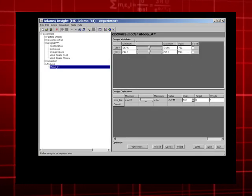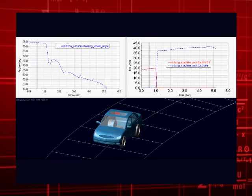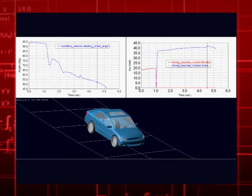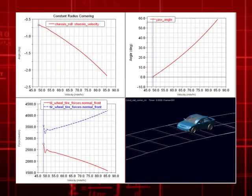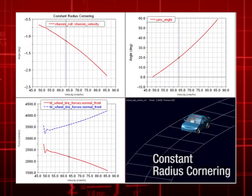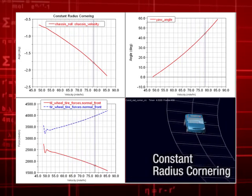Once an optimum suspension is chosen, the engineer then creates a full vehicle model with that suspension. Full vehicle ride and handling analysis like lane change and constant radius cornering is now carried out to look at metrics like yaw rate, chassis roll, steering wheel angles, etc.